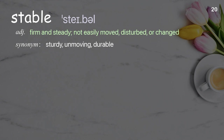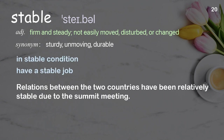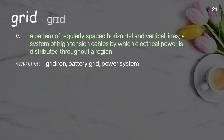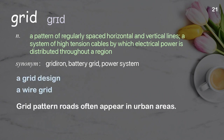Stable: firm and steady; not easily moved, disturbed, or changed. Examples: in stable condition, have a stable job. Relations between the two countries have been relatively stable due to the summit meeting. Grid: a pattern of regularly spaced horizontal and vertical lines; a system of high-tension cables by which electrical power is distributed throughout a region. Examples: a grid design, a wire grid. Grid pattern roads often appear in urban areas.